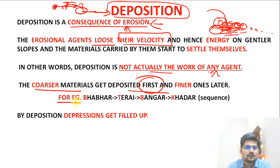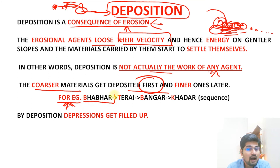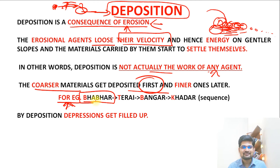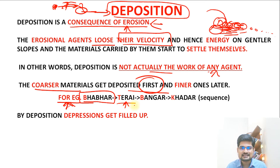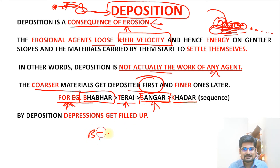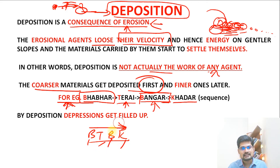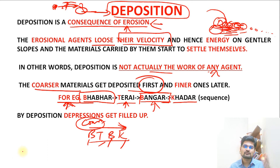A good example is fluvial erosion and deposition in the Himalayan foothills. The first deposition of coarsest material is called the Bhabar zone. Then comes the Terai in the foothill plains with less coarseness. Further on is coarser alluvium called Bangar, and then the finest deposit called Khadar. This sequence — BTBK (Bhabar, Terai, Bangar, Khadar) — explains how the entire alluvial plains formed from the Himalayan foothills to the delta.